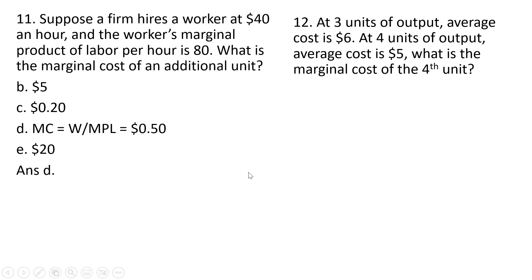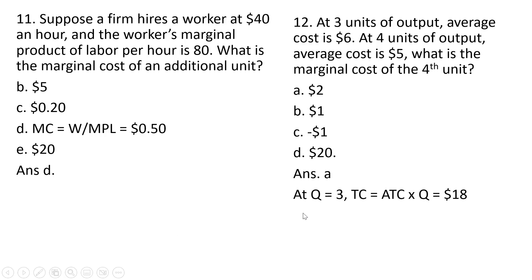Question 12. At three units of output, average cost is $6. At four units of output, average cost is $5. What is the marginal cost of the fourth unit? At three units of output, total cost is average total cost times quantity — three times six, or $18. At four units of output, total cost is $5 times 4, or $20. So as we go from three to four units of output, total cost increases by $2 — that represents marginal cost. Answer choice A.